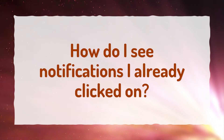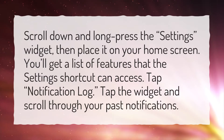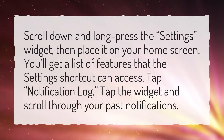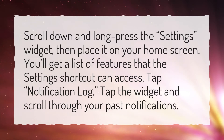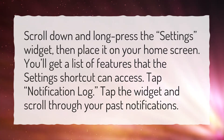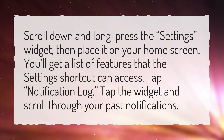How do I see notifications I already clicked on? Scroll down and long press the Settings widget, then place it on your home screen. You'll get a list of features that the Settings shortcut can access. Tap Notification Log. Tap the widget and scroll through your past notifications.